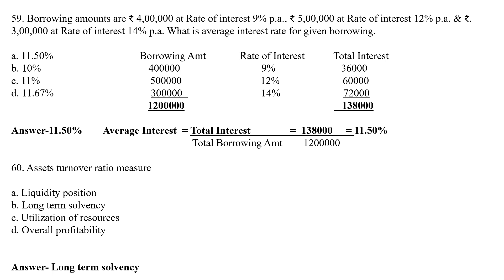Next MCQ: Asset turnover ratio measures — Option A: liquidity position, Option B: long-term solvency, Option C: utilization of resources, Option D: overall profitability. The correct answer is Option C — utilization of resources. Asset turnover ratio measures utilization of resources.